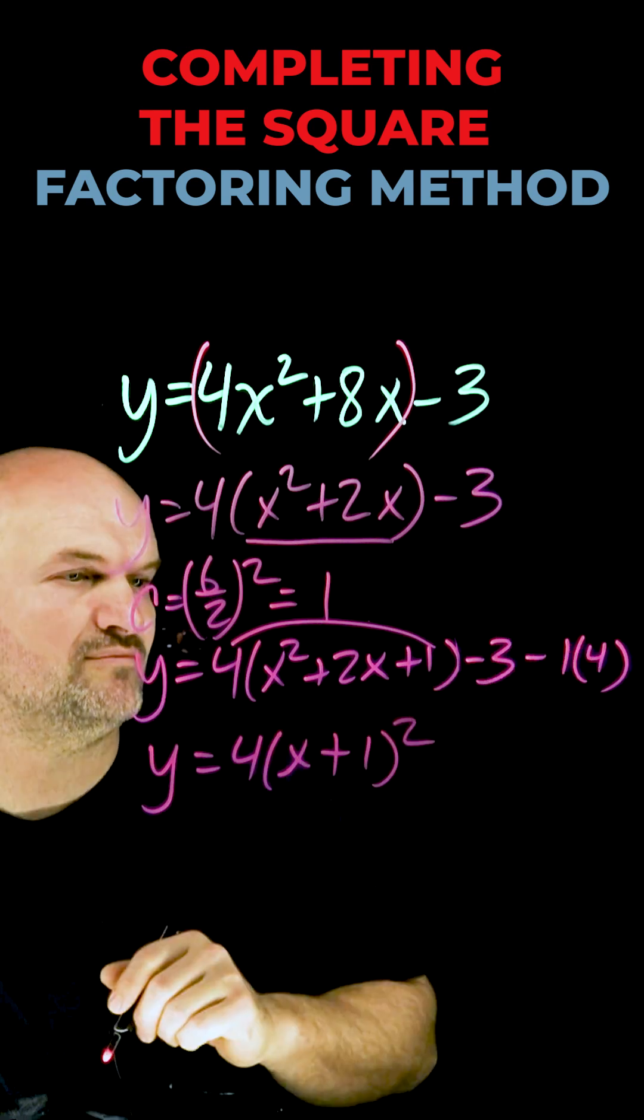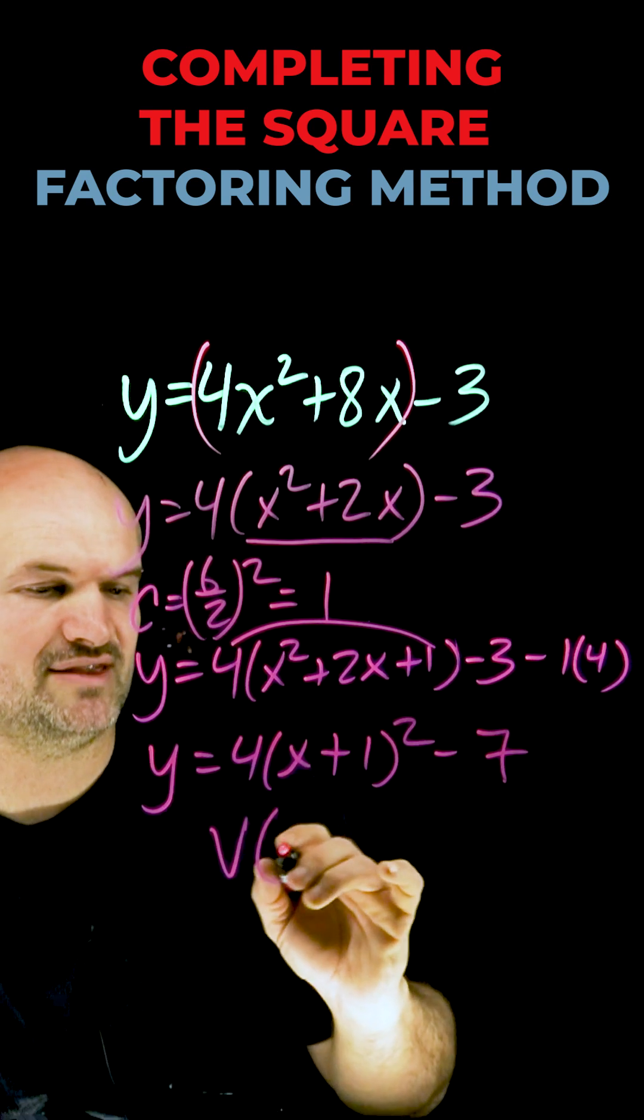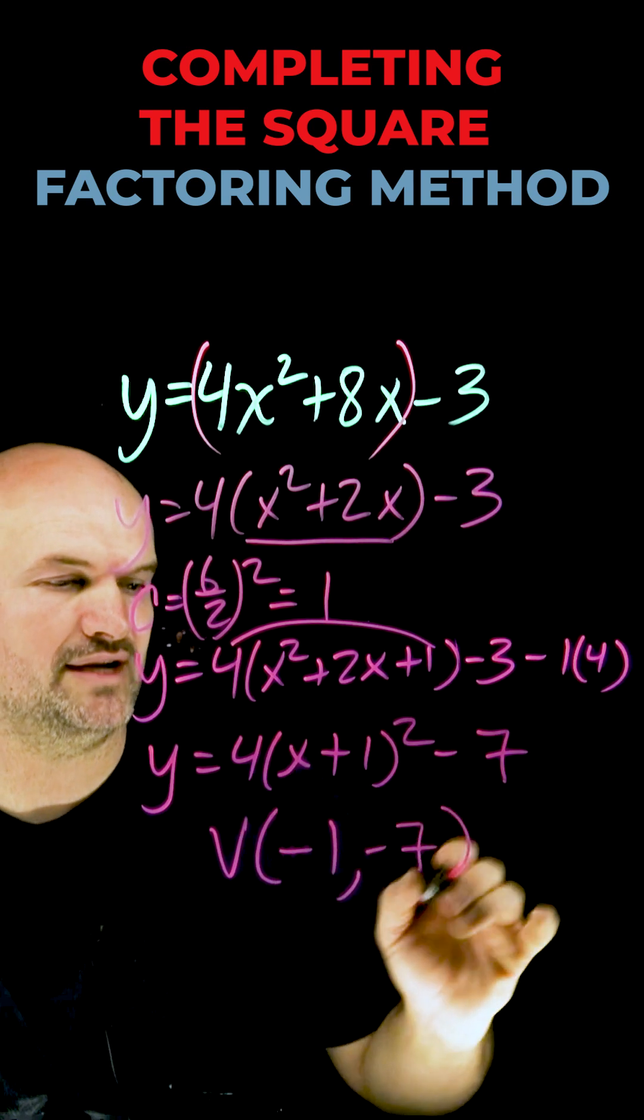And then negative 3 minus 4 is going to be a negative 7, and now I can identify the vertex to be negative 1, negative 7.